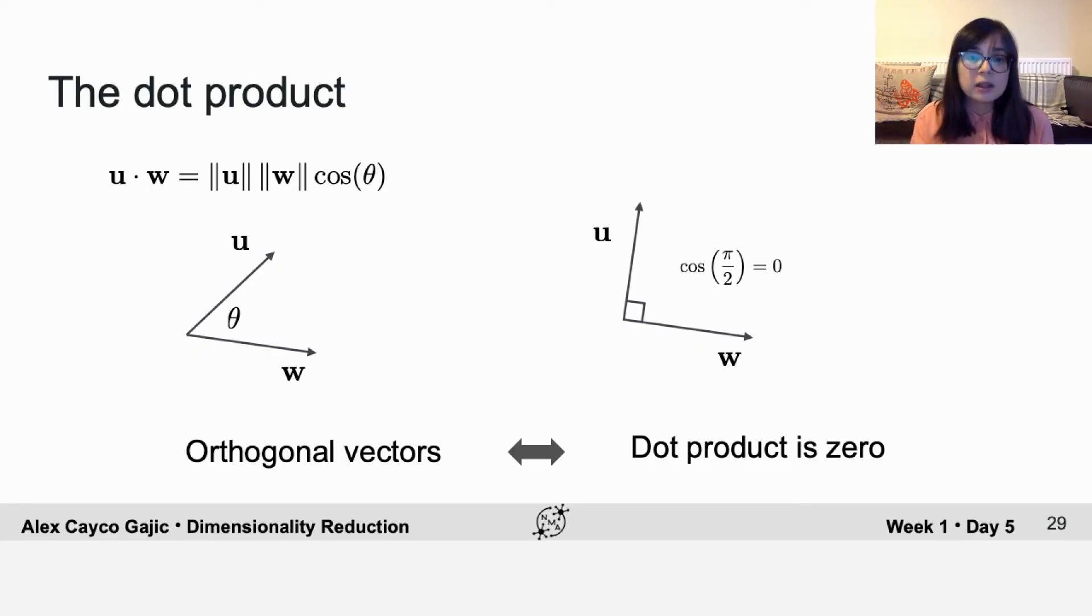But does this mean that we need to always look for the angle between any two vectors to find out if they're orthogonal? Thankfully, there is another formulation of the dot product.